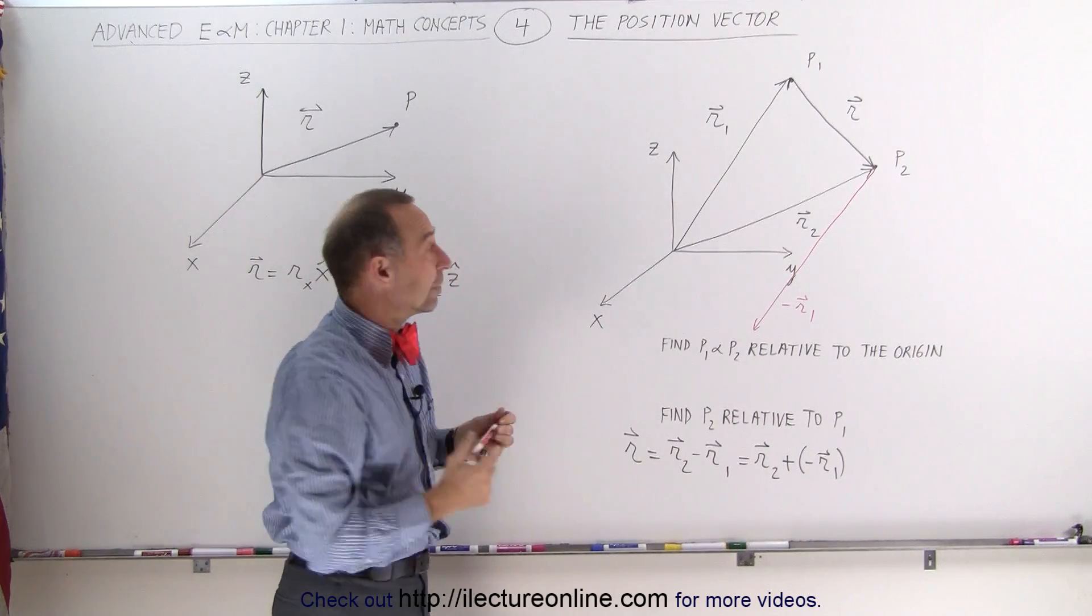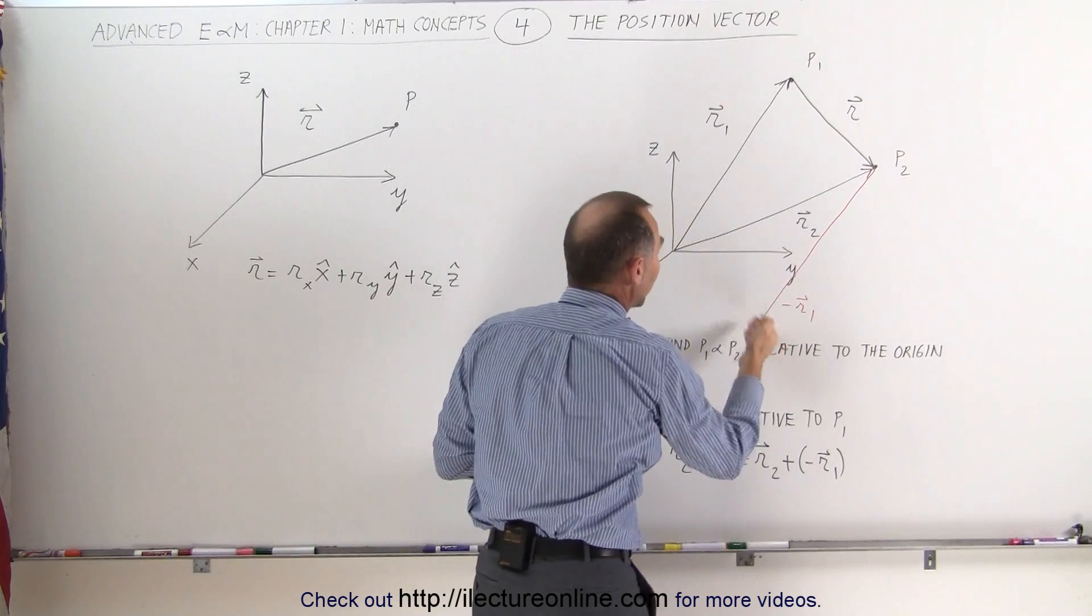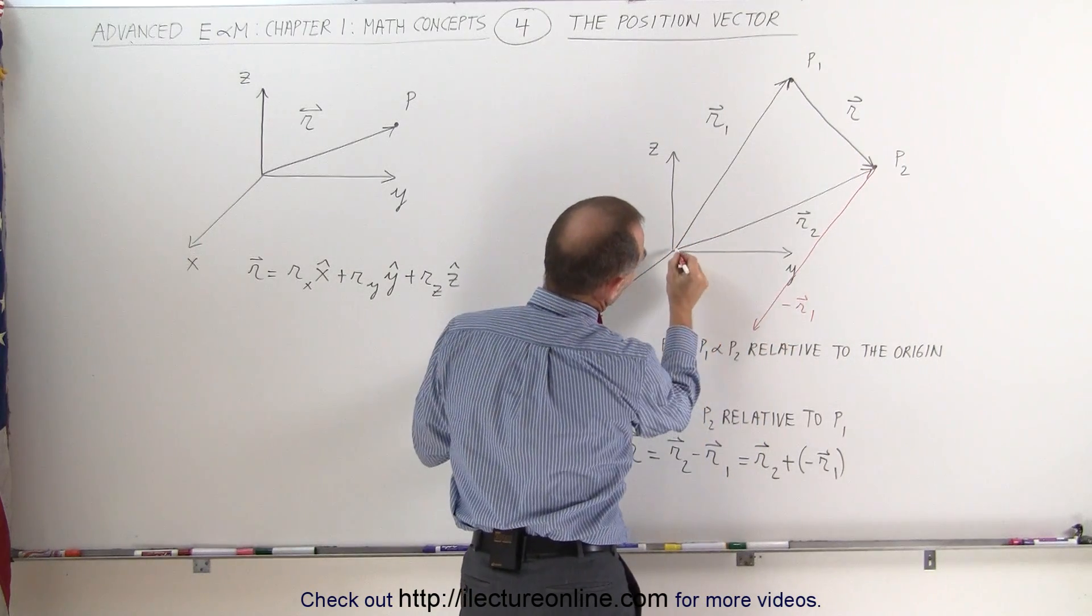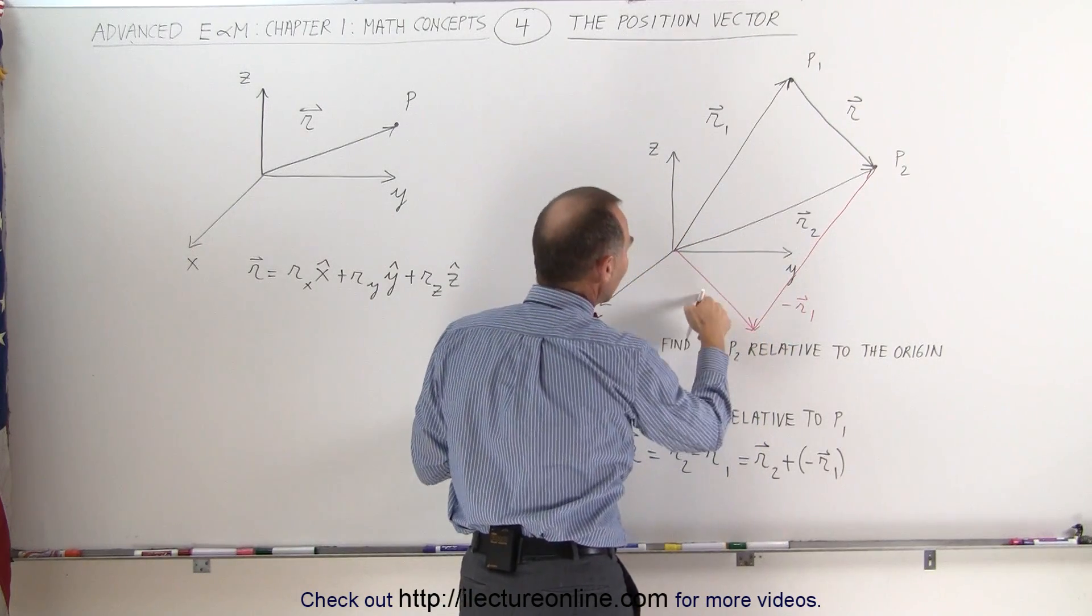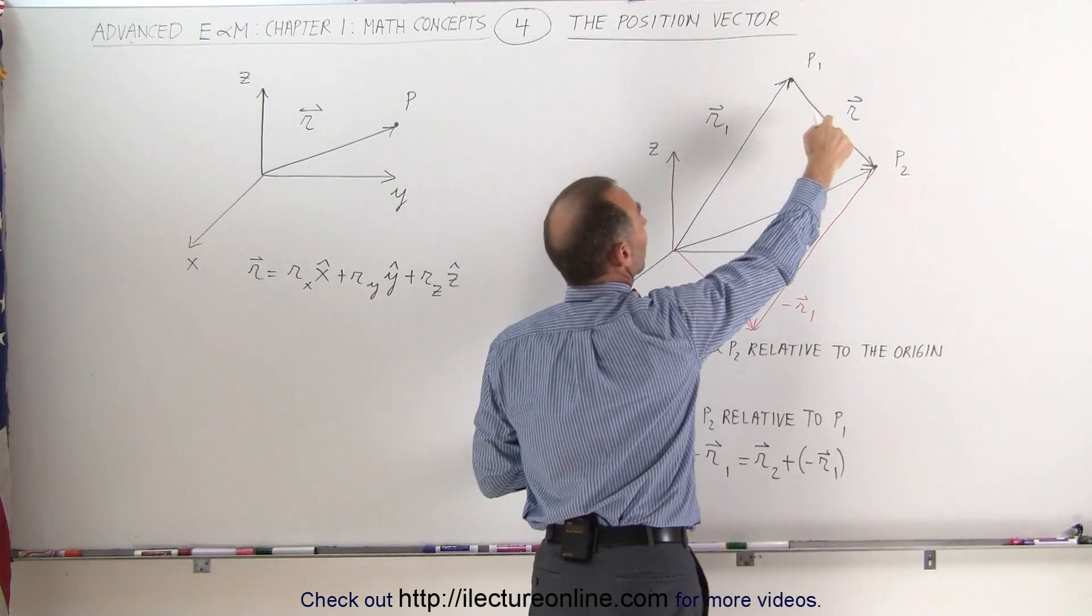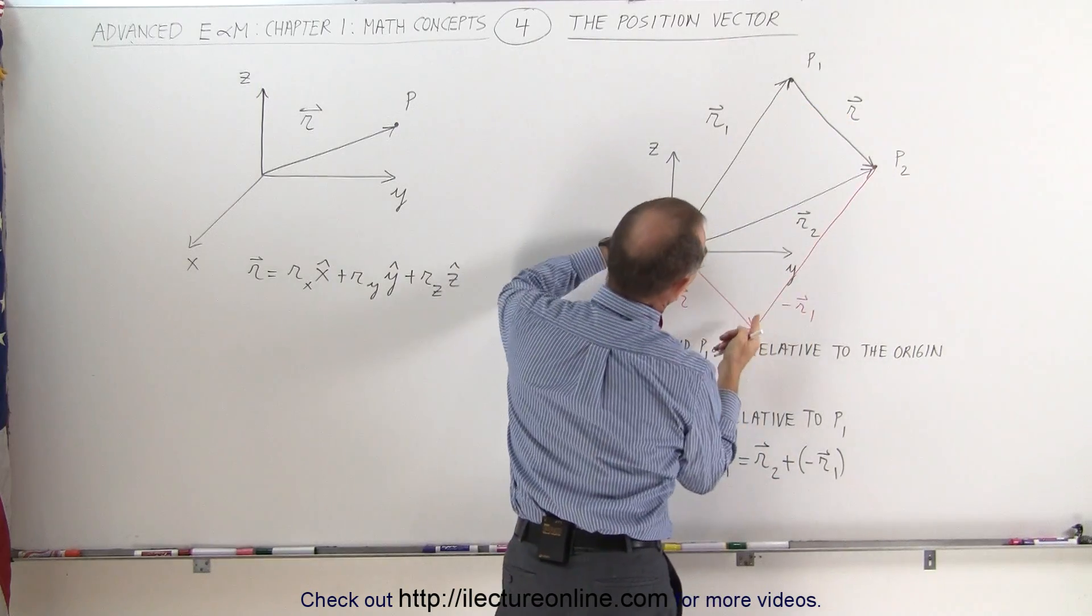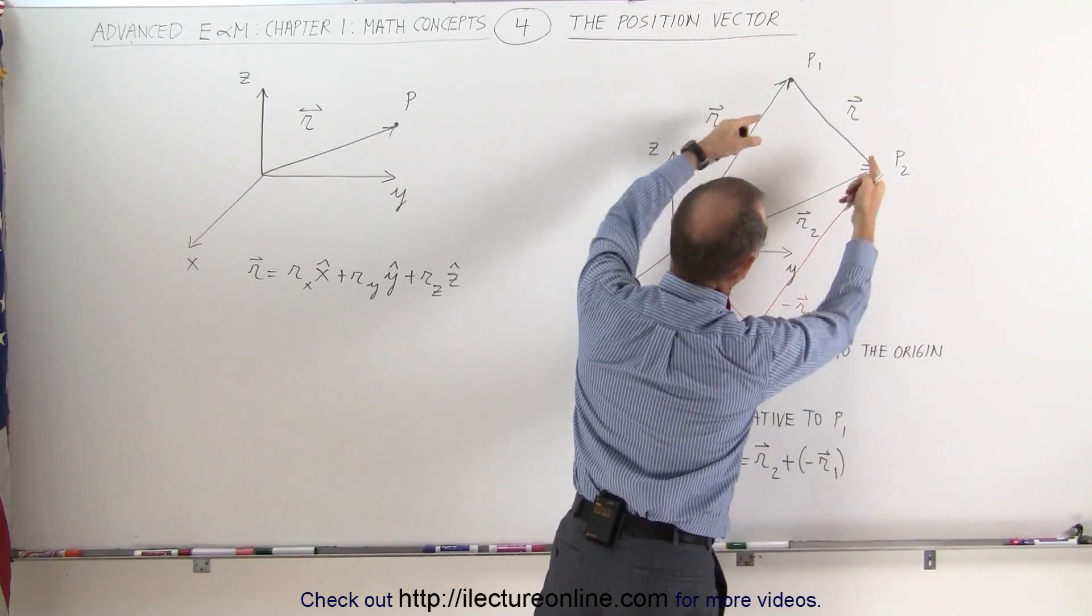If I now add those two together, if I now add position vector r2 to the negative of r1, if I add that together, I get this vector right here. And this then becomes the r vector, the position vector from point 1, of point 2 relative to point 1. And notice that this vector and this vector is the same vector.